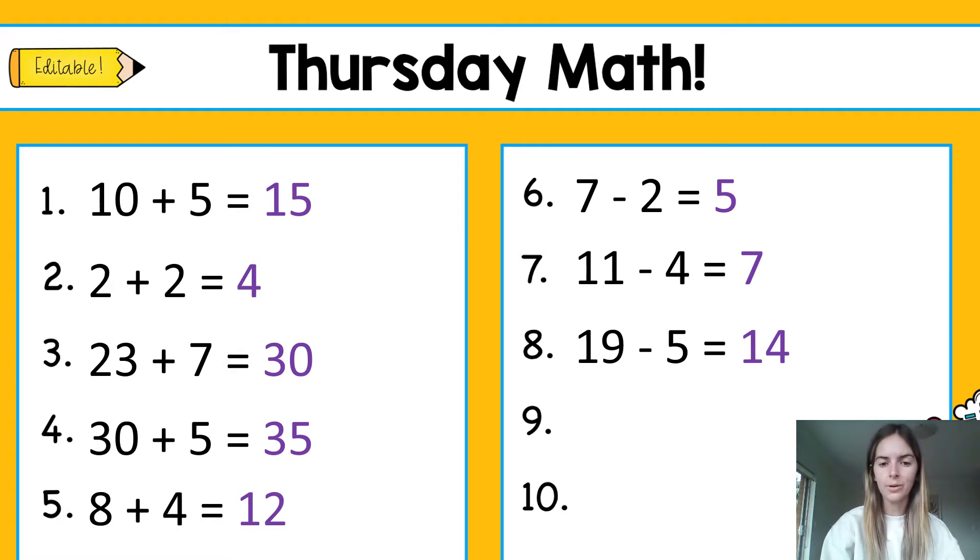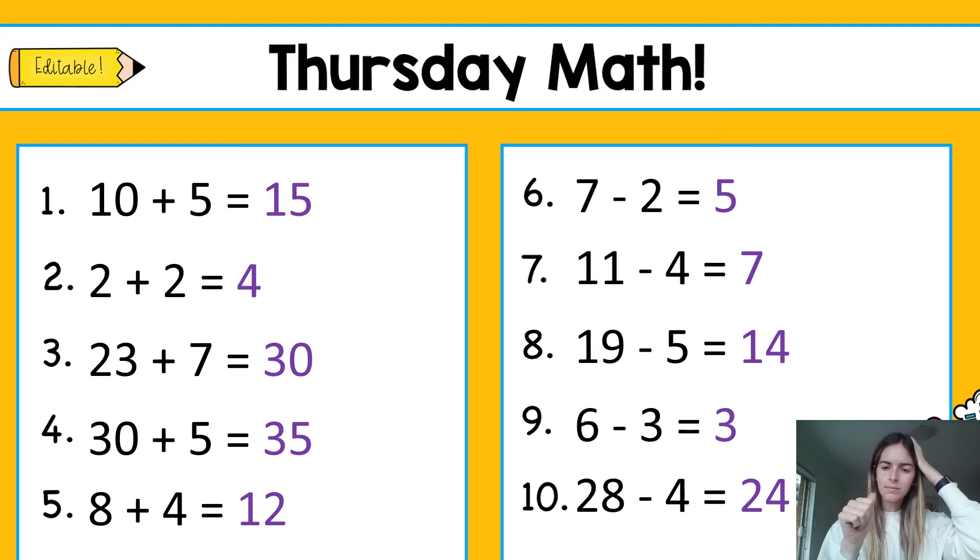Question 9: 6 take away 3 equals 3. So 6, 5, 4, 3. And our last one, question 10 was 28 take away 4 is 24. So again, let's put that big number in our head: 28, 27, 26, 25, and 24. Well done everyone.